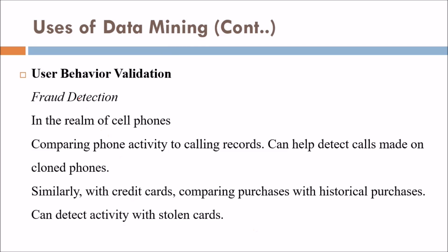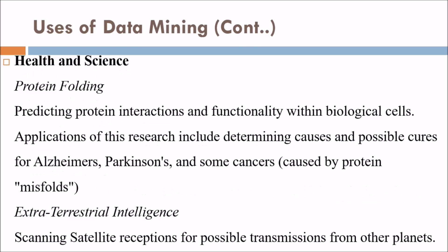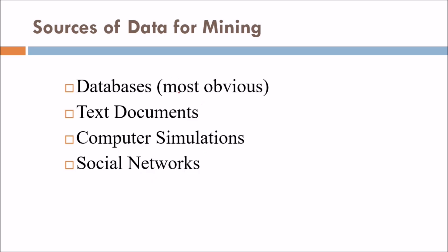Data mining also enables user behavior validation and fraud detection — for example, in cell phones, comparing phone activity to calling records can detect calls made on cloned phones; with credit cards, comparing purchases with historical purchases can detect activity with stolen cards. In health sciences, applications include protein folding, predicting protein interactions with biological cells — with research toward understanding Alzheimer's, Parkinson's, and some cancers. Data mining is also applied to scanning satellite receptions for possible transmissions from other planets. Sources of data include databases, text documents, computer simulations, and social networks.